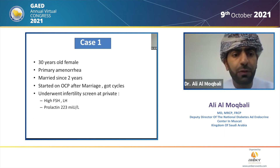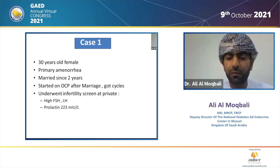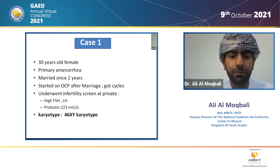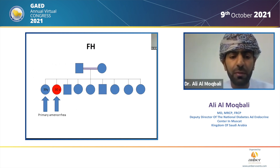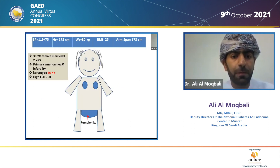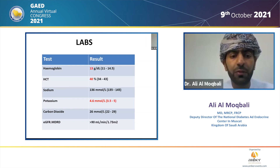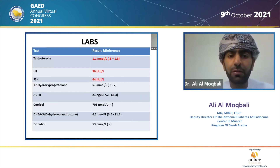Our first patient is a 30-year-old female who has primary amenorrhea. She's been married for two years and was started on OCP after marriage and got some cycles. Due to infertility, she was evaluated and her LH and FSH are very high. Interestingly, her karyotype was 46XY. Her eldest sister has a similar issue but was never evaluated. On examination, she has no facial dysmorphism and has a completely female phenotype, including well-formed breasts and external female genitalia.